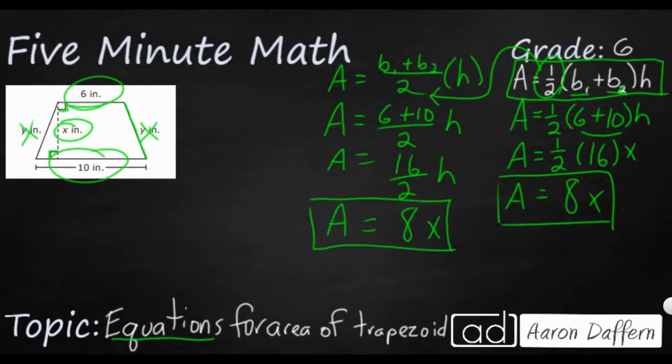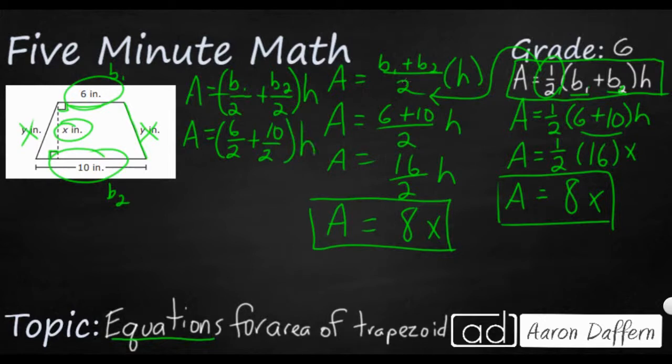There is another way for you to write the area of a trapezoid. You can do this: you can take A equals b sub 1 divided by 2 plus b sub 2 divided by 2, and then multiply all of that by h. Let's see if it works. So we're going to take our b sub 1. Let's just go ahead and call that b sub 1. It doesn't really matter. We're going to call that 6 cut in half. We're going to call this b sub 2. So we're going to say that's 10 cut in half. We're divided by 2, and we're going to get our h here.